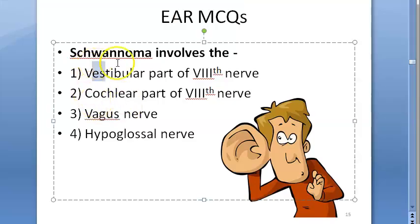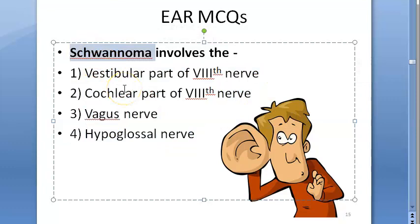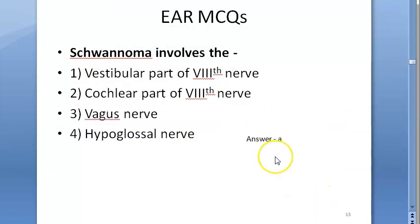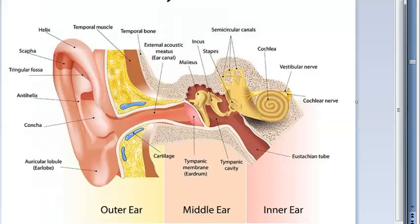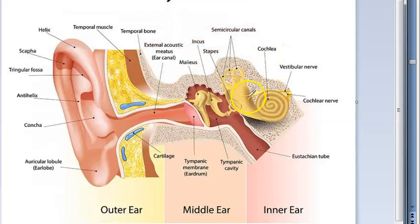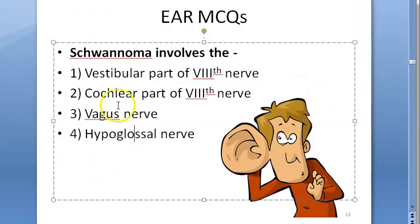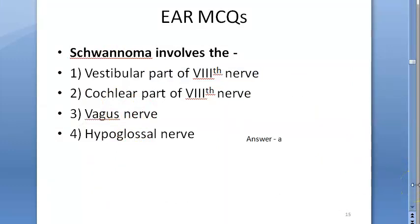Schwannoma involves which part — vestibular or cochlear? The answer is the vestibular part of the eighth nerve. Looking at ear anatomy, you have the vestibular part of the eighth nerve and the cochlear part, and these two join to become the vestibulocochlear nerve. Schwannoma involves the vestibular nerve.